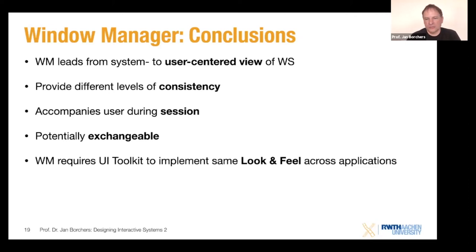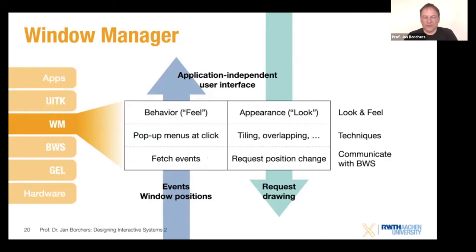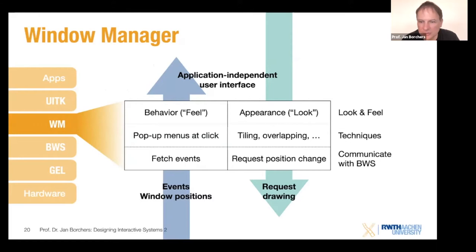Achieving description consistency requires the window system developers to define some kind of special language explaining how configuration is described. In the case of macOS, the format for specifying these things was essentially an XML document type definition (DTD) that tells you how these things are specified. To conclude: the window manager provides an appearance to windows as a whole, decorates them, and provides behavioral consistency using techniques like pop-up menus on click, or tiling versus overlapping window managers. We'll talk more about these when we get to concrete examples of window systems.